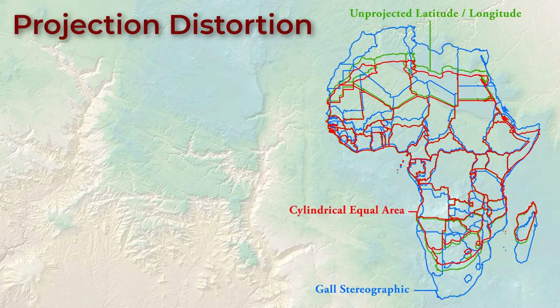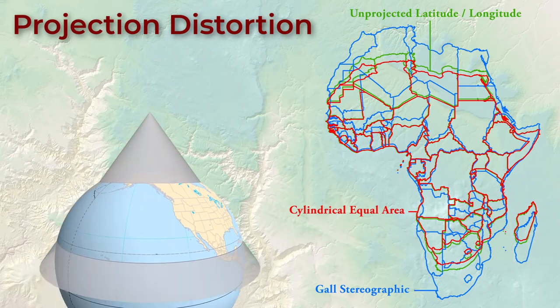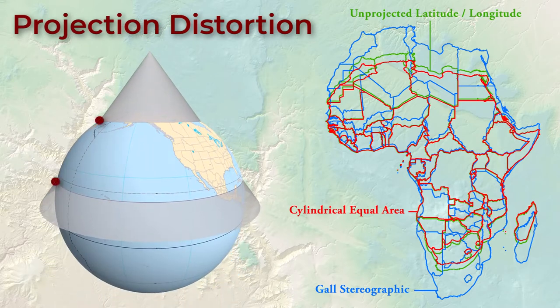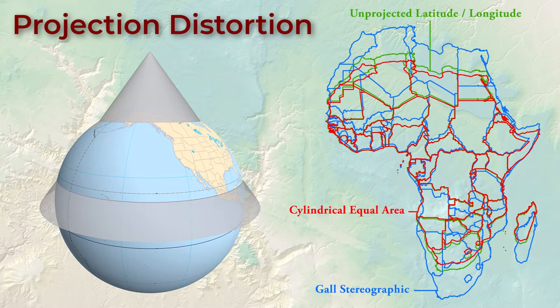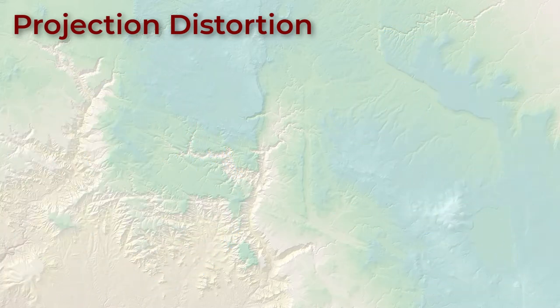Projection distortion is always minimized at or near the intersection of the projection surface and the planet. So if you have a cone sitting on the planet, the distortion will be minimized where that cone actually touches the planet. Different projections cause different types of distortion.